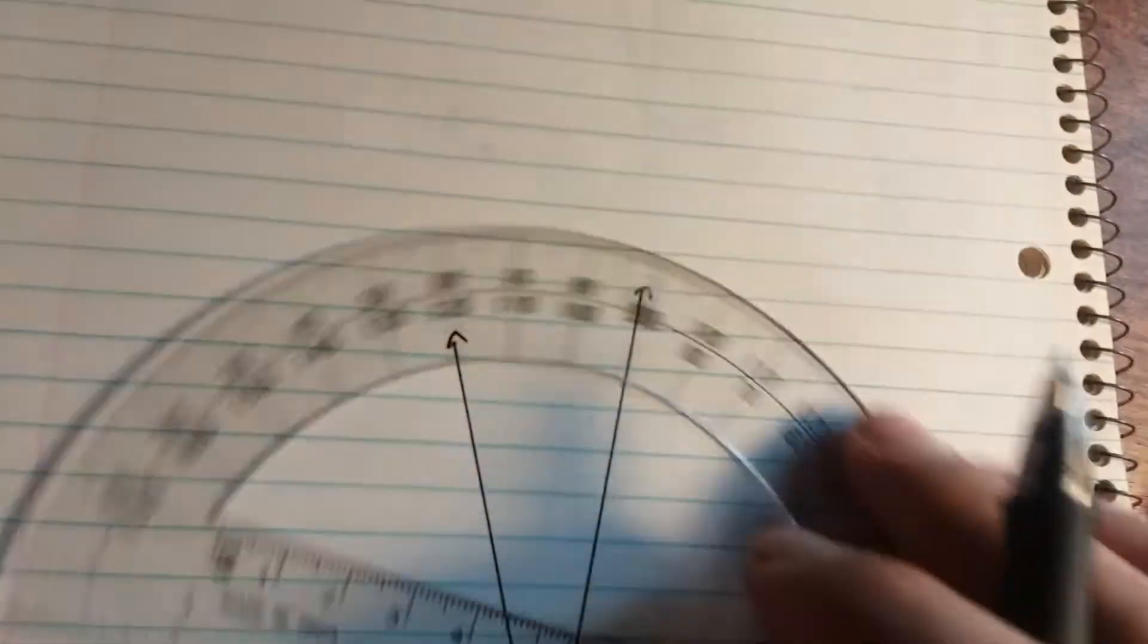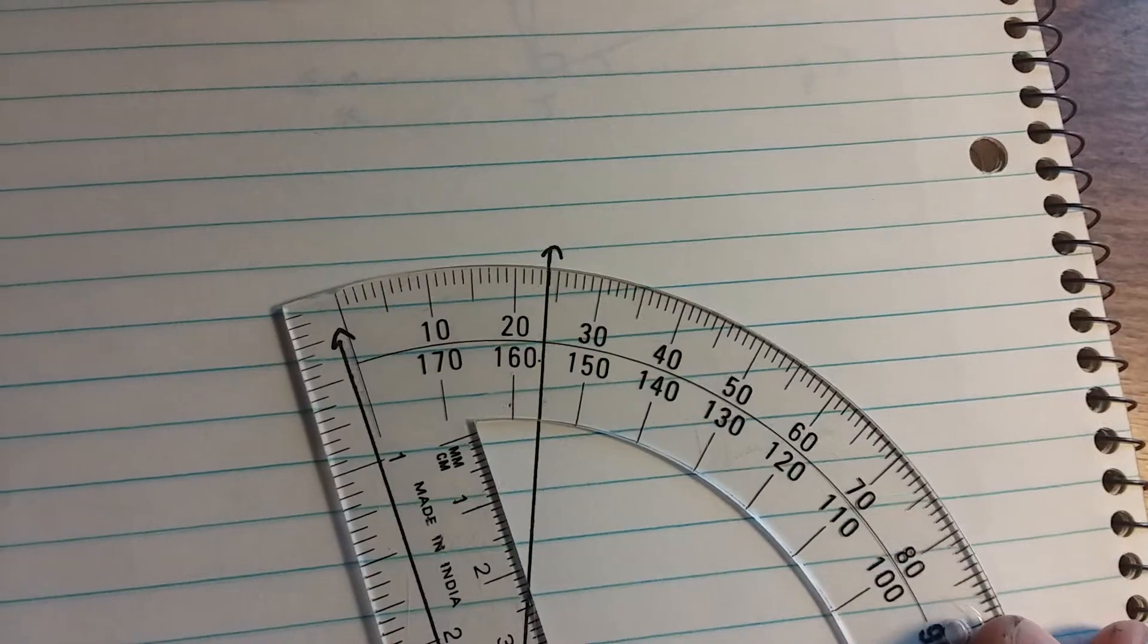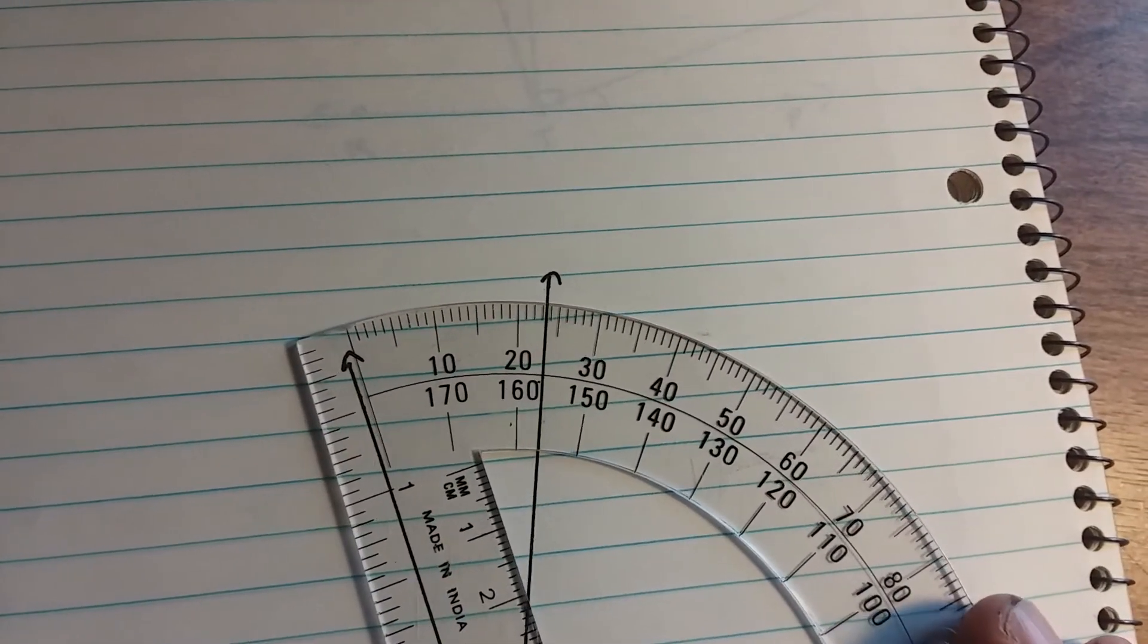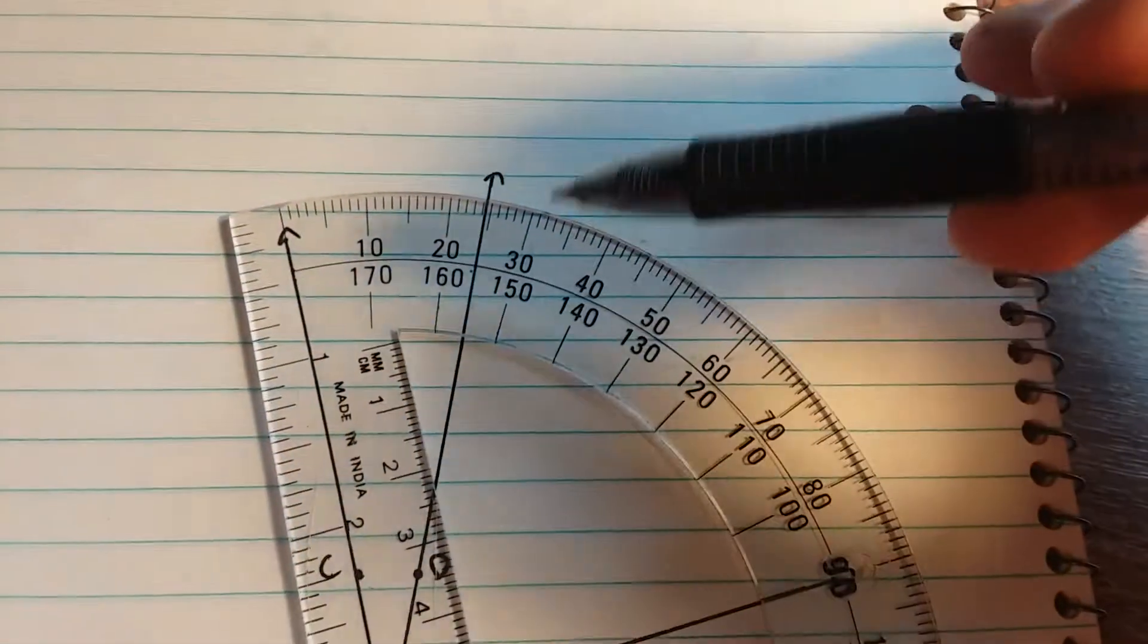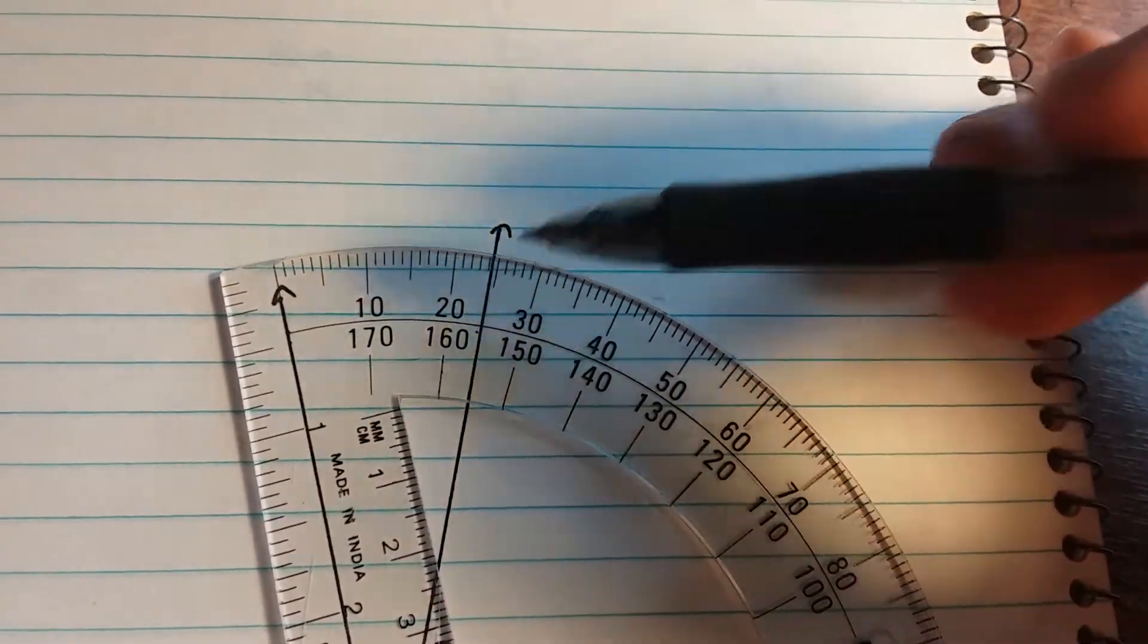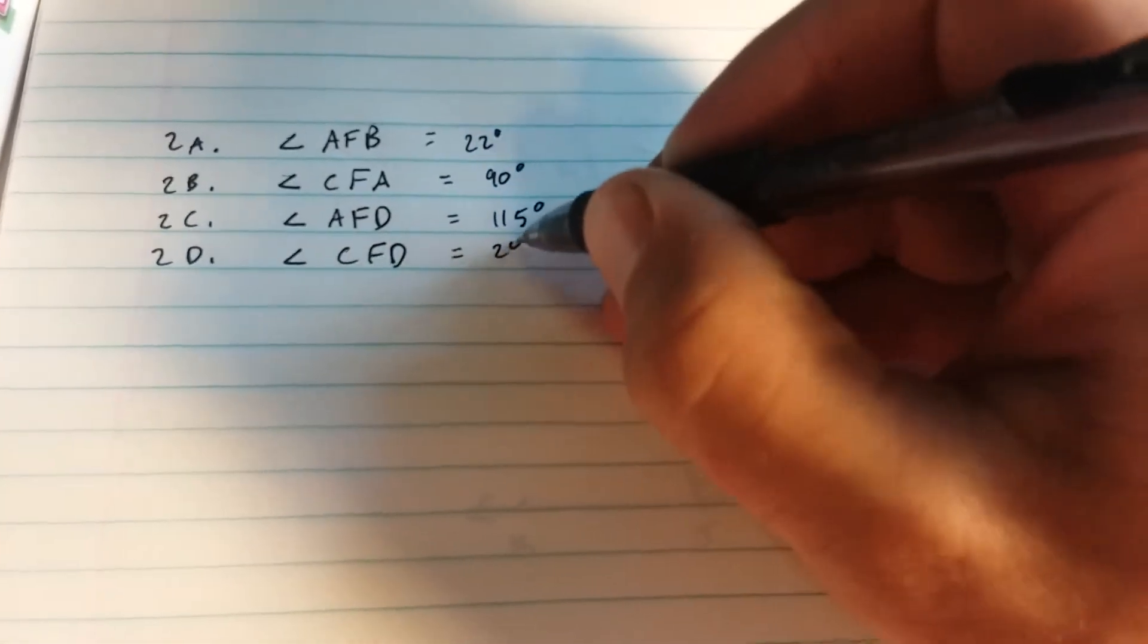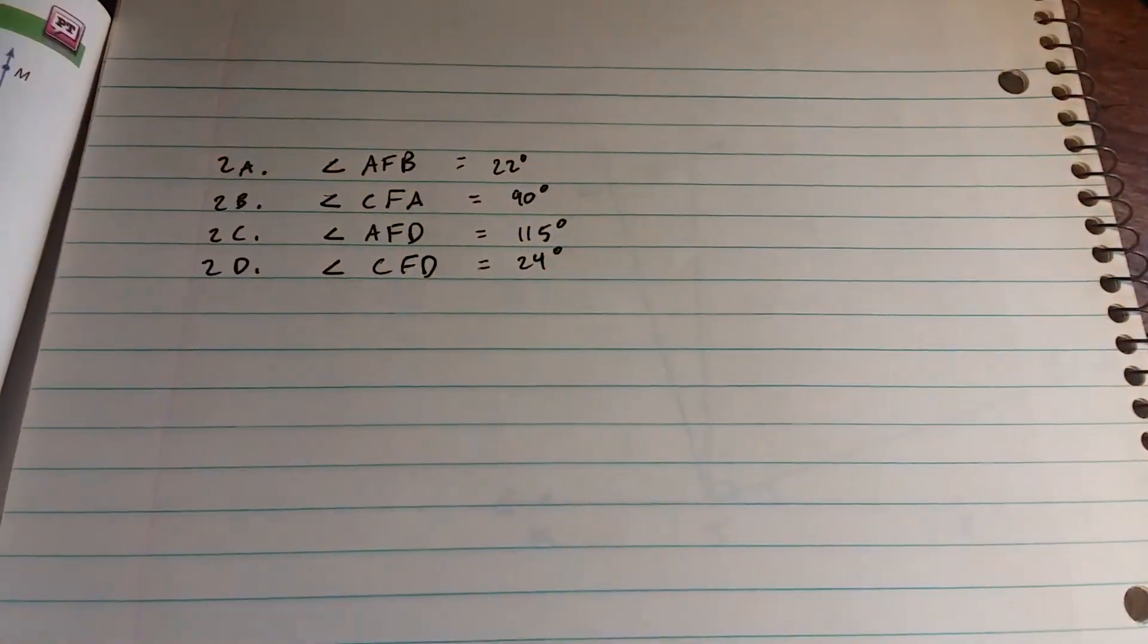And then CFD. It's acute. So I know it's less than 90 because it's small. Notice that's a small angle. So it must be either 24 or 25 degrees. I'll just put 24. If you're within a degree, I'm going to accept your answer here.